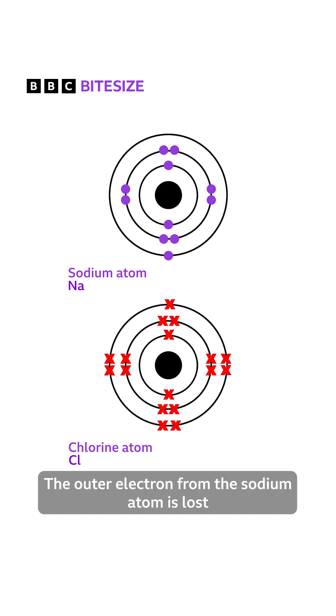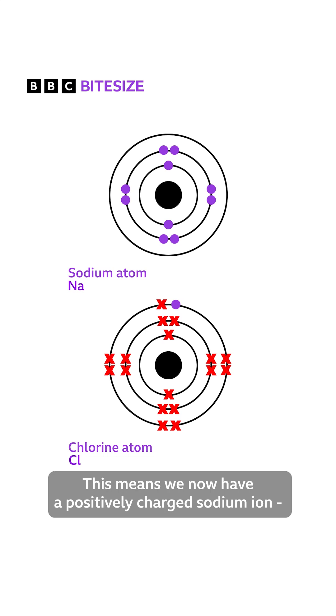The outer electron from the sodium atom is lost and gained by the outer shell of the chlorine atom. This means we now have a positively charged sodium ion, as it's lost a negatively charged electron.